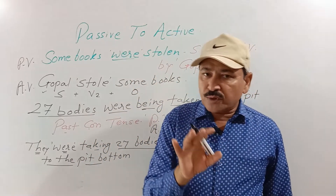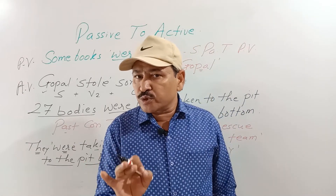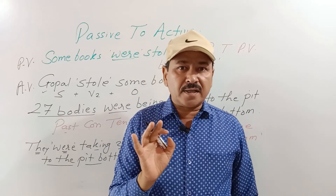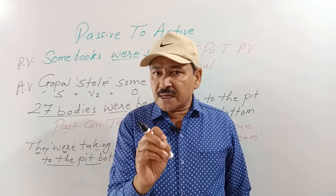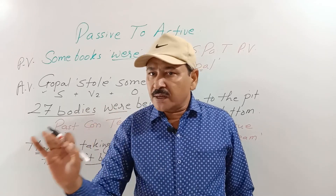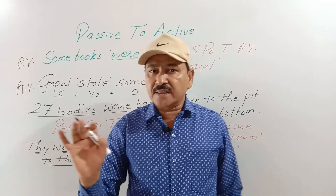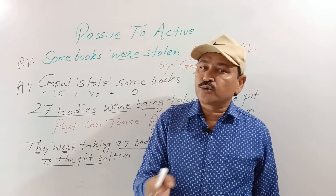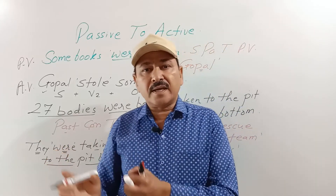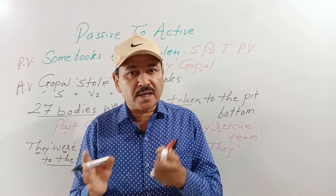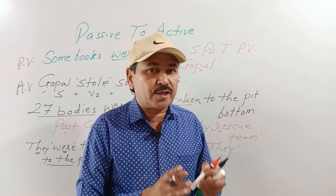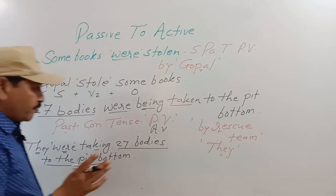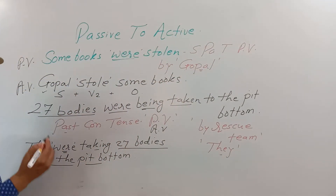Passive का sentence देखने के बाद डरना नहीं है — सोचना है। अगर आपने tense को identify कर लिया — चाहे वो past perfect में हो, simple present tense में हो, या present continuous tense में — तो उसमें अगर doer दिया नहीं गया है, तो वो doer लेना है। Doer को आगे लेना है और as per the rules and regulation of tenses, passive to active आप कर सकते। So I am giving you two sentences for your practice.